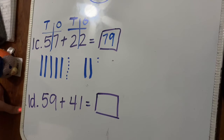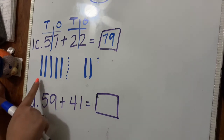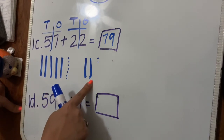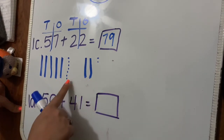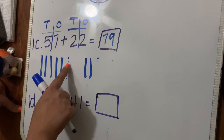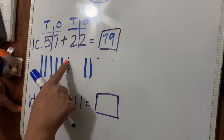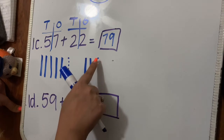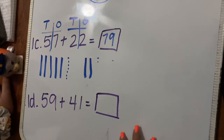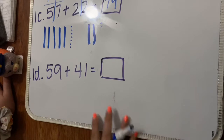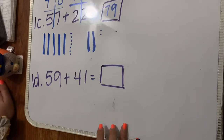You can count them all, or skip count: 10, 20, 30, 40, 50, 60, 70, 71, 72, 73, 74, 75, 76, 77, 78, 79. Both ways will work. So the answer to 57 plus 22 is 79.